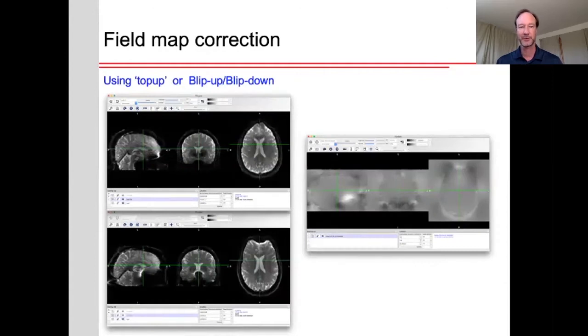Another technique to correct for distortions is to use what some people refer to as blip-up-blip-down, or the FSL program top-up correction. And that is if you acquire the data with an echo-planar imaging sequence scanning in one direction through k-space, some parts of the image might be stretched. If you flip that around and scan the other way through k-space, those same parts will be squished together. And so by comparing the images with these reverse phase encode directions, you can find out what parts of the brain have moved due to field distortions, and you can create a map of the field that way.